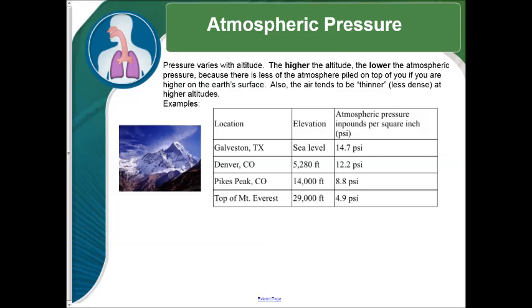Now, at Denver, you're a mile high, or 5,280 feet. The pressure is only 12.2 PSI. Pikes Peak, Colorado, much higher elevation, the pressure is only 8.8 PSI, and then at the top of Mount Everest, 29,000 feet, pressure is only 4.9. There is not a lot of atmosphere at the top of Mount Everest. That's why people that hike there need oxygen tanks because there's not enough oxygen in the air to actually survive.